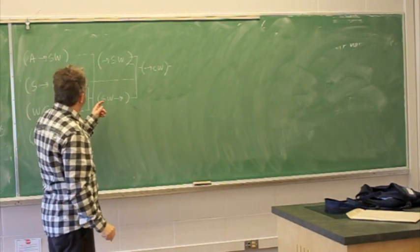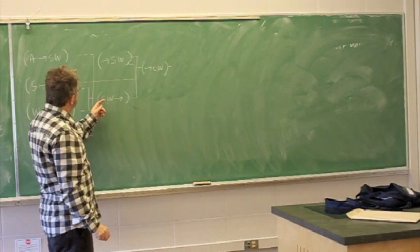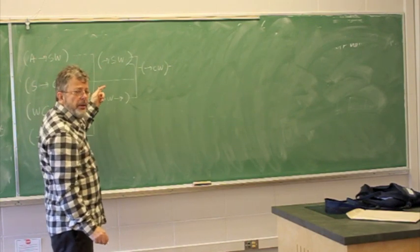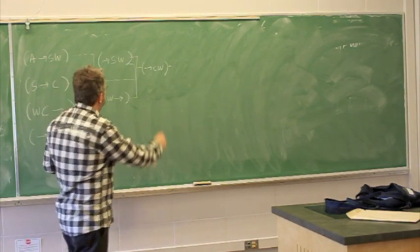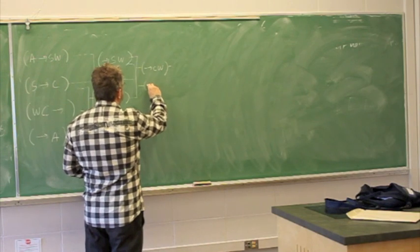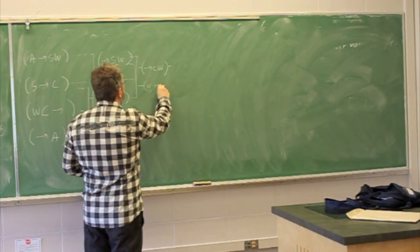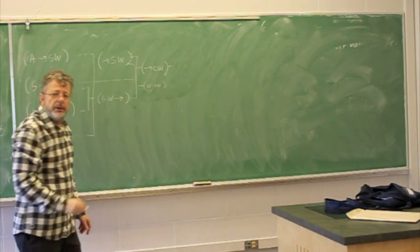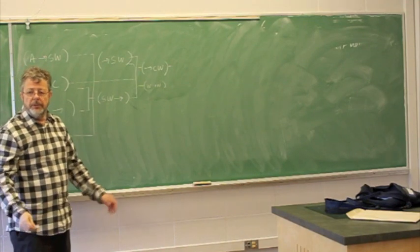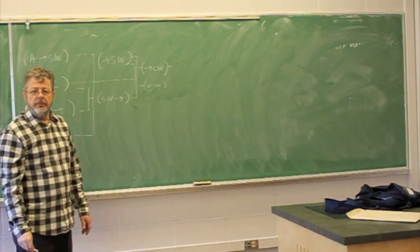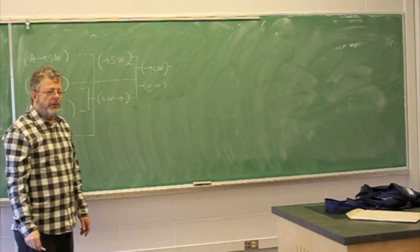So we can do resolution, let's say S appears on both sides. So if we cancel that out, we get W implies W. But this is useless because it's guaranteed to be true. Of course W implies W. So we're not really getting any closer to contradiction.